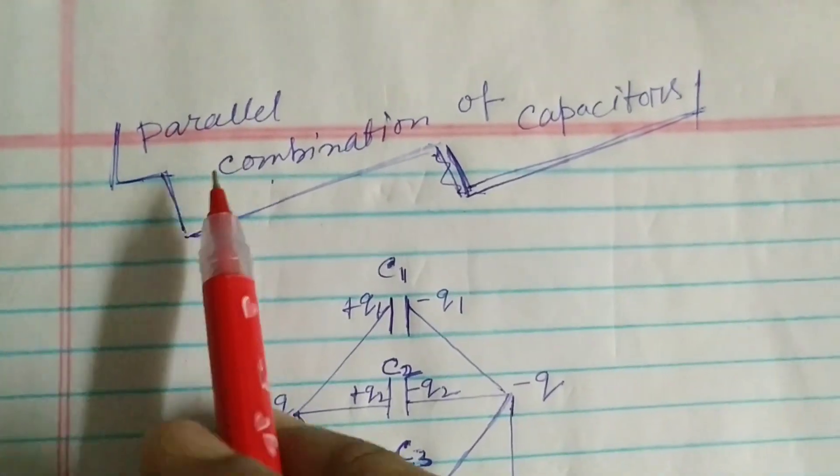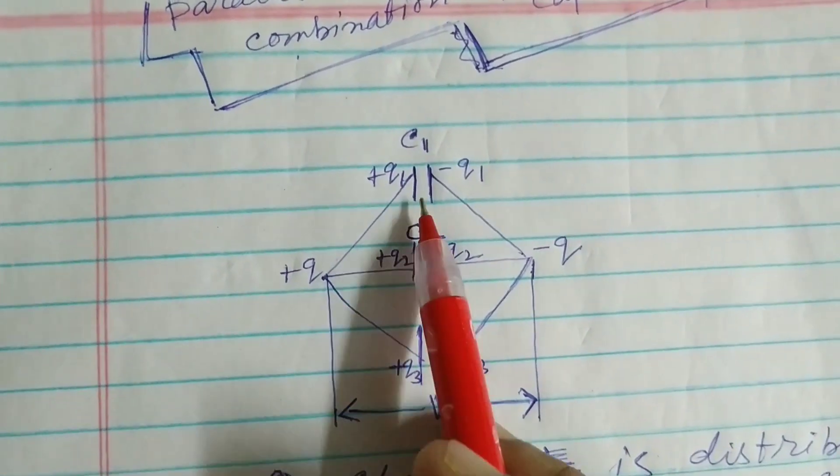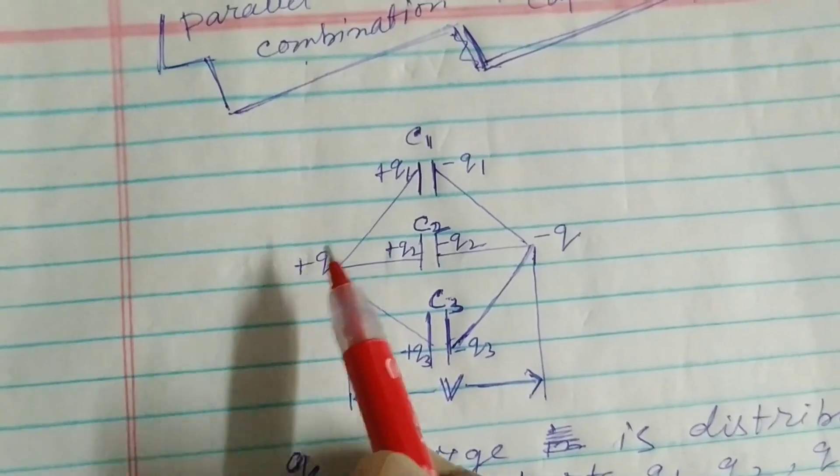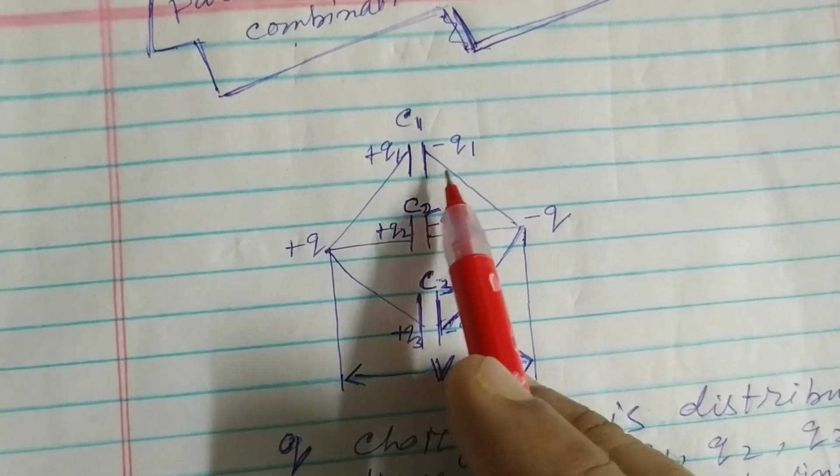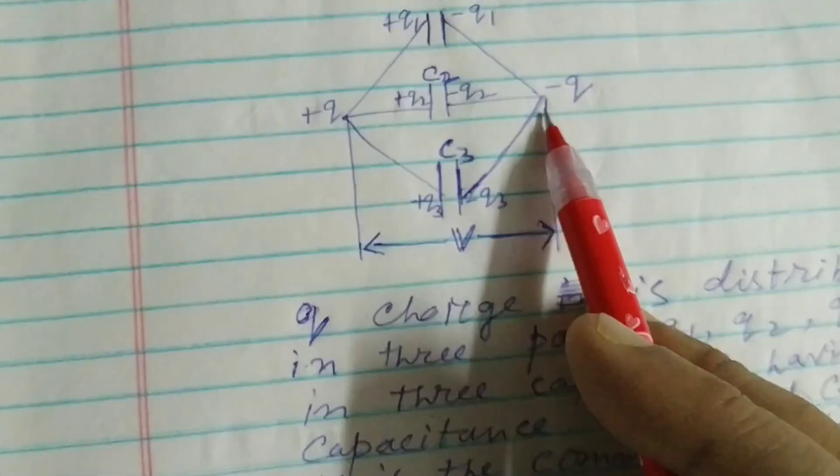Now I will move to parallel combination of capacitors. So they are connected and here plus Q is given charge, and that is distributed in capacitors as Q1, Q2, Q3, and here is minus Q.